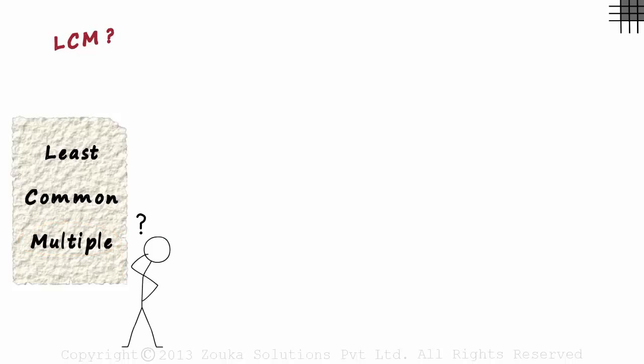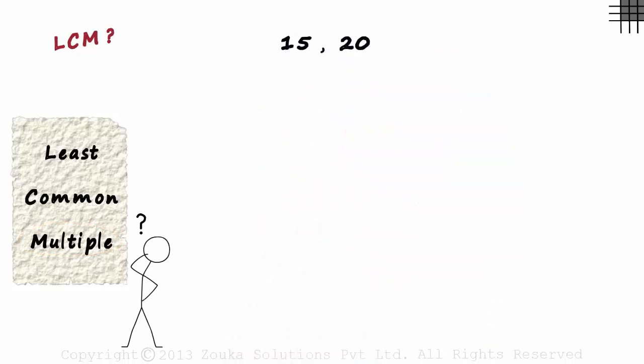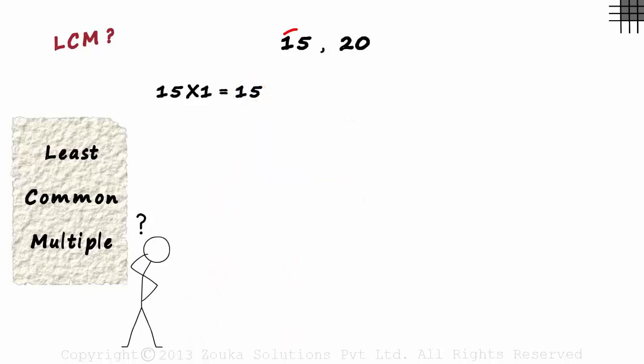Let's say we want to find the LCM of 15 and 20. Let me explain what multiples mean. 15 multiplied by 1 equals 15. So 15 is one of the multiples of 15.